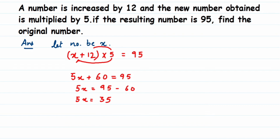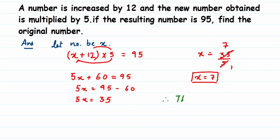We cancel 5 into 35 to get x equals 7. Therefore, the original number is equal to 7. I hope you understood — it's a simple question. The question looks a bit big but when you read it, it's very simple. If you have a question or doubt, you can leave a comment below.